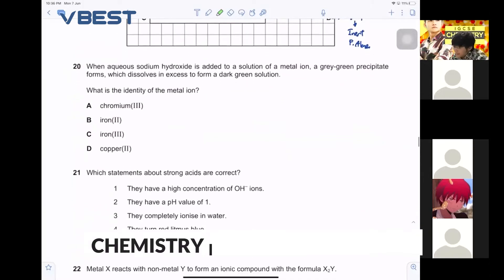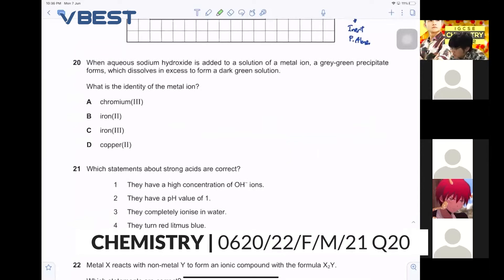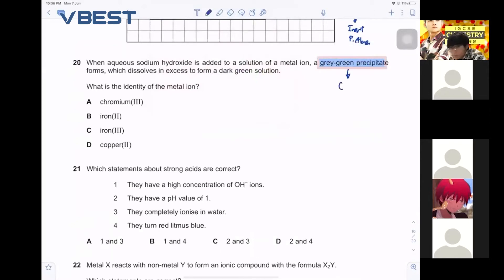When aqueous sodium hydroxide is added to a solution of metal ion, gray-green precipitate. Okay, so the keyword is gray-green. The moment you see gray-green is definitely your chromium 3+. Did you say iron 2? Iron 2 is green, not gray-green.